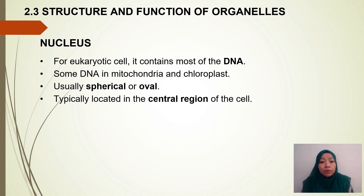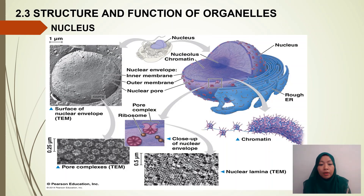For a eukaryotic cell, the nucleus contains most of the DNA, carrying the genetic information for the cell. Some DNA can also be found in mitochondria and chloroplast. The nucleus is usually spherical or oval in shape and is typically located in the central region of the cell. Now let's look at the structure of the nucleus.